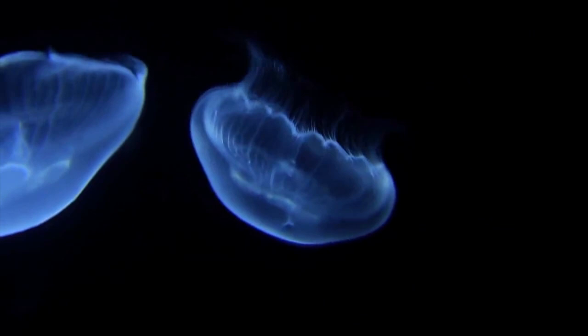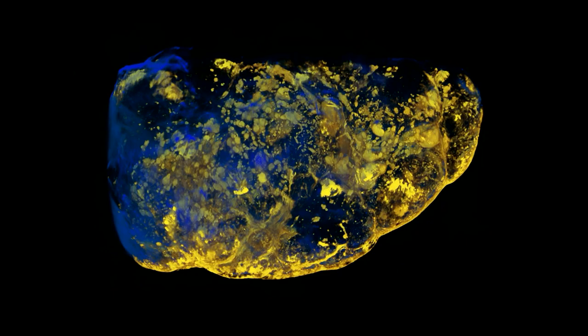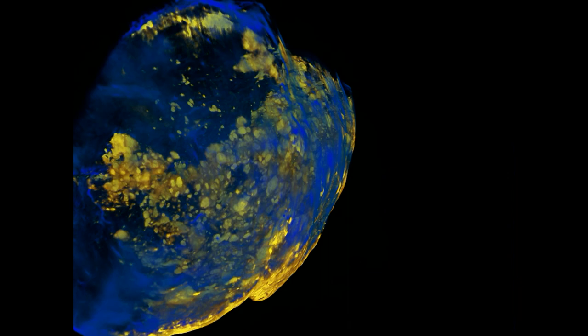Light sheet microscopy is a scientific technique which uses this transparency and fluorescence from jellyfish. It allows us to see the biological processes occurring inside the living tissue. By making the sample transparent, we can deliver light in and we can receive light out.